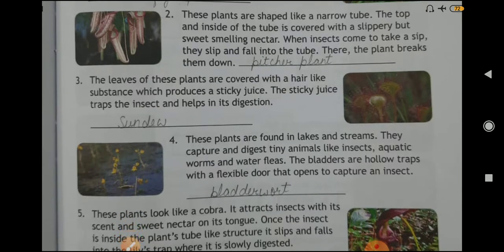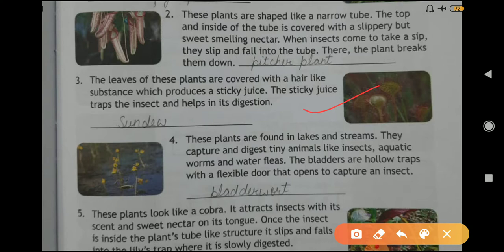Question number three: the leaves of these plants are covered with hair-like substances which produce a sticky juice. This sticky juice traps the insect and helps in its digestion. Answer: Sundew. Question number four: these plants are found in lakes and streams. They capture and digest tiny animals like insects, aquatic worms, and water fleas.